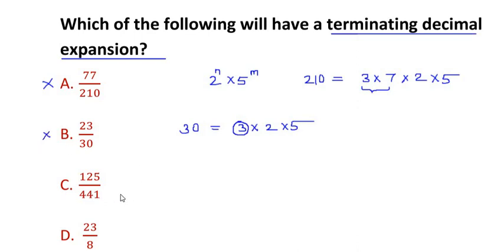Now if we look at 441, the option C, this is nothing but a square number of 21, that is 21 times 21, which can also be written as 3 times 7 times 3 times 7. So there is no 2 and 5 in the denominator.